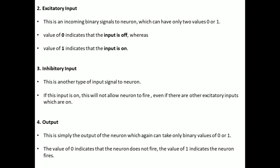The second component is Excitatory Input. This input is an incoming binary signal to the neuron, where this signal can have only two values: either 0 or 1. The value 0 indicates that the input is not present — that is, the input is off — whereas the value 1 indicates that the input is present, or the input is on.